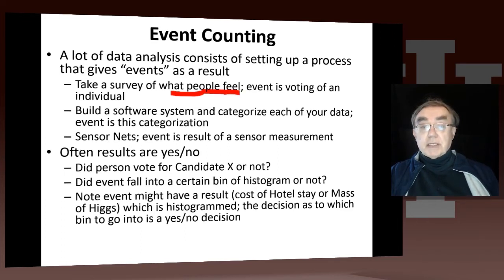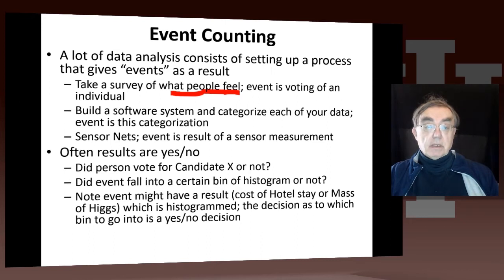Alternatively, you can take some data, you build some software. That software assigns a feature to the data that is good or bad or it's big or little. And the result of that characterization for each of your data is an event. Another obvious scientific or technical source of events is sensor nets, where the event is the result of a sensor measurement. Sensors are an example of a device that streams events. Typically, at least in the view of this class, they stream the event back to the cloud.